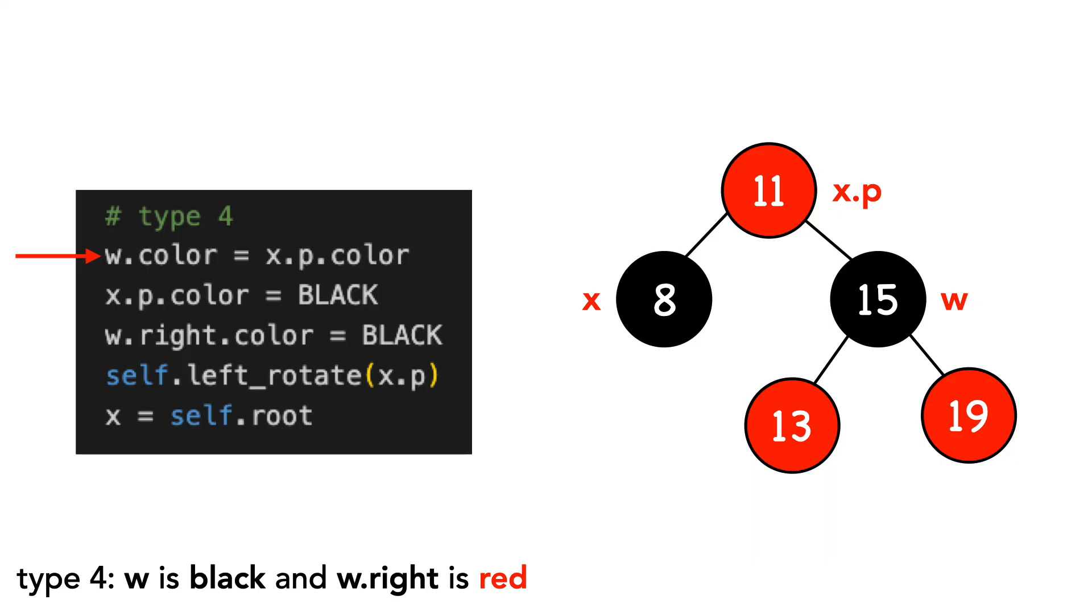We set w equal to x's parent's color, which is red. We set x's parent equal to black, as well as w.right.